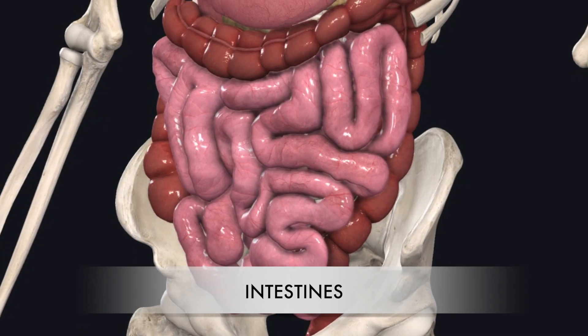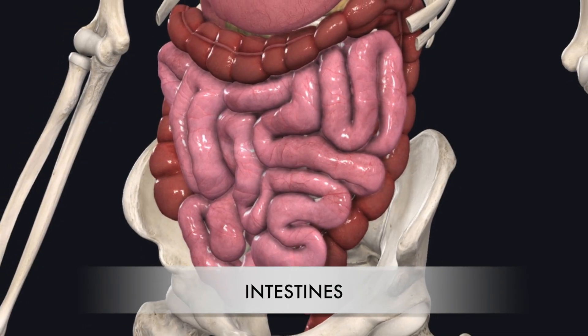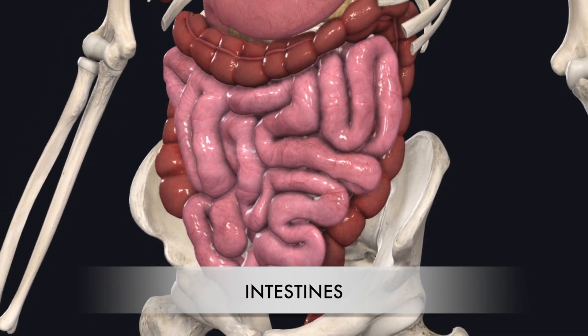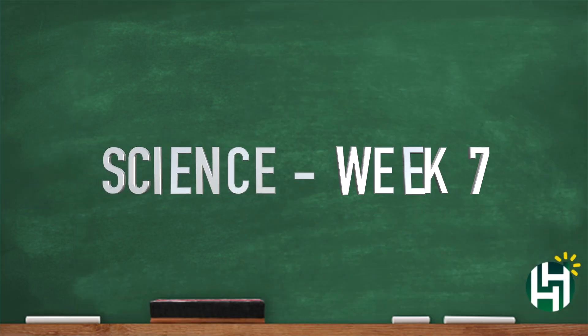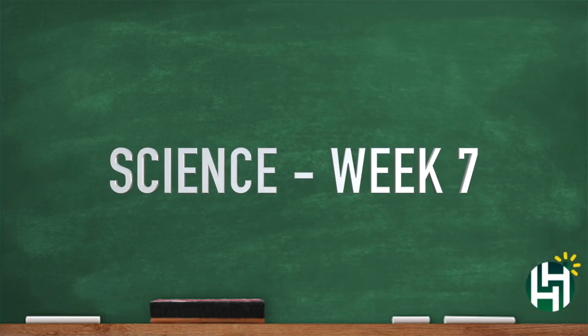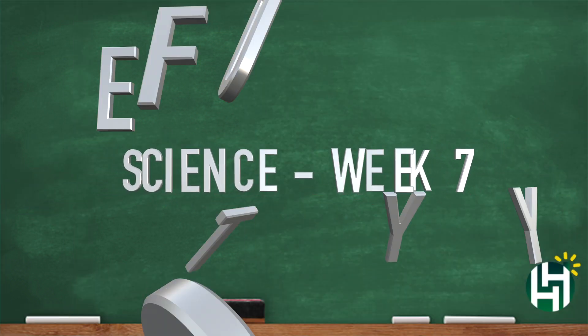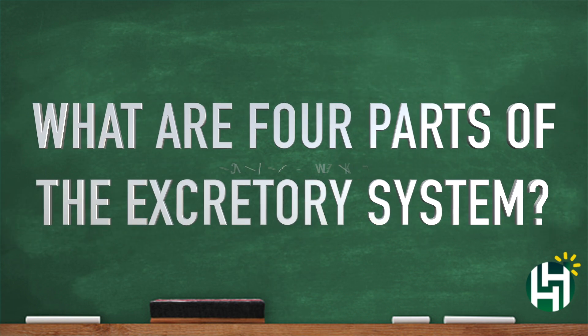Okay everybody, that was week seven science — what are four parts of the excretory system? Now you know and you're better for it. All right, and I'm out. Bye.